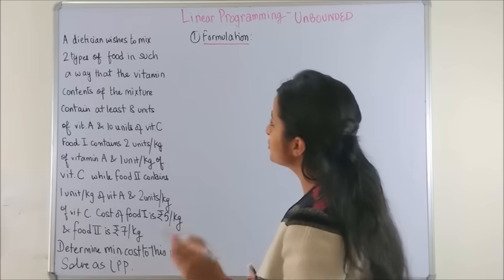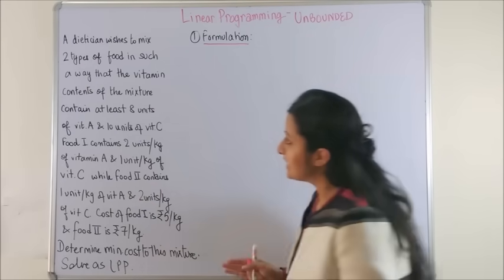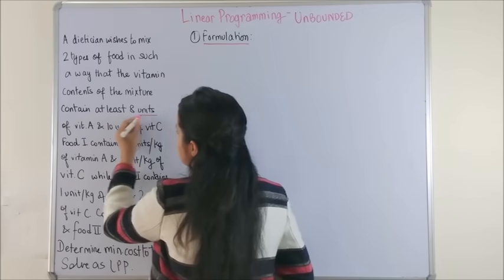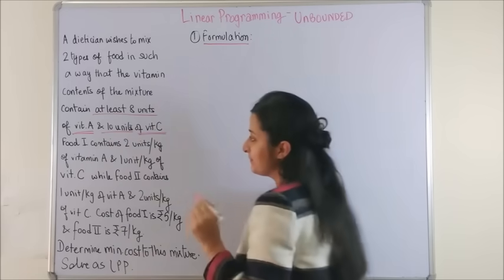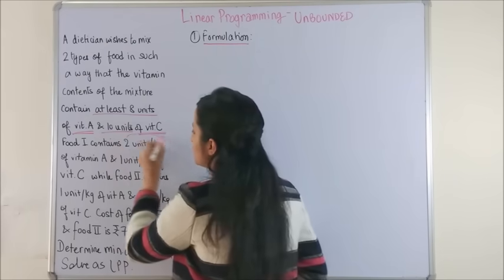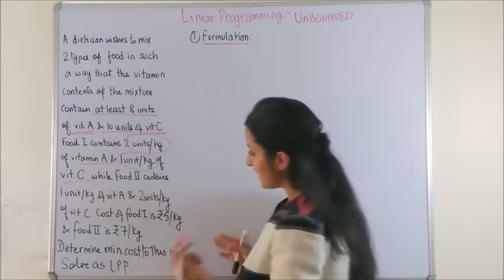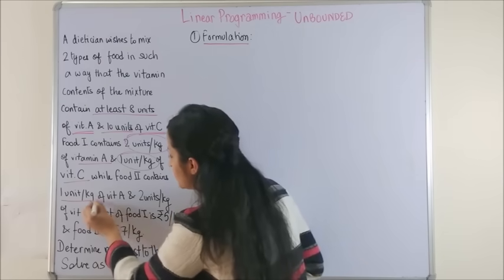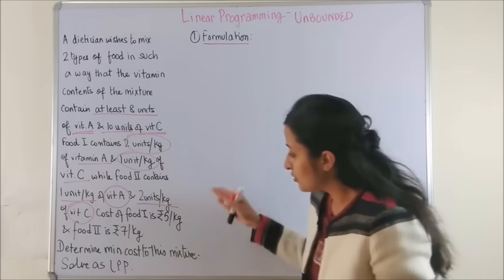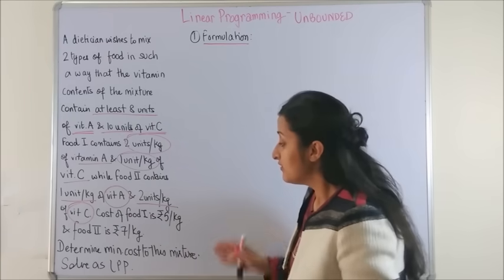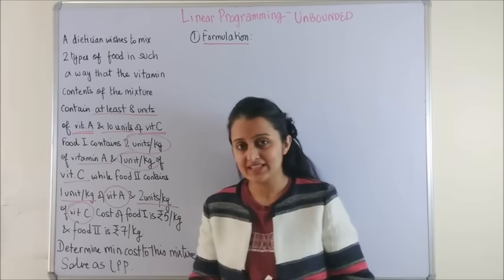It says, a dietician wishes to mix two types of food in such a way that the vitamin contents of the mixture contain at least eight units of vitamin A and ten units of vitamin C. Food one contains two units per kg of vitamin A and one unit per kg of vitamin C. Likewise, food two contains one unit per kg of vitamin A and two units per kg of vitamin C. When the cost of each food type has been mentioned, we need to determine the minimum cost to this mixture and solve this as a linear programming problem.